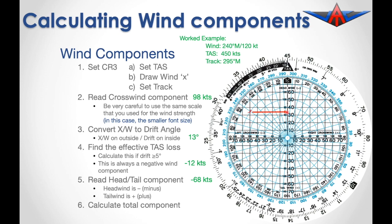Our total component is the sum of the effective TAS loss, which is minus 12, and the wind component, which is minus 68. When we add those together, we get a total of minus 80 knots as our wind component.